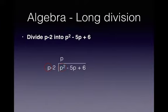Now what we need to do is take that p that we just calculated and multiply it by the two things outside the brackets. So p by p is p squared and p by minus 2 is minus 2p.